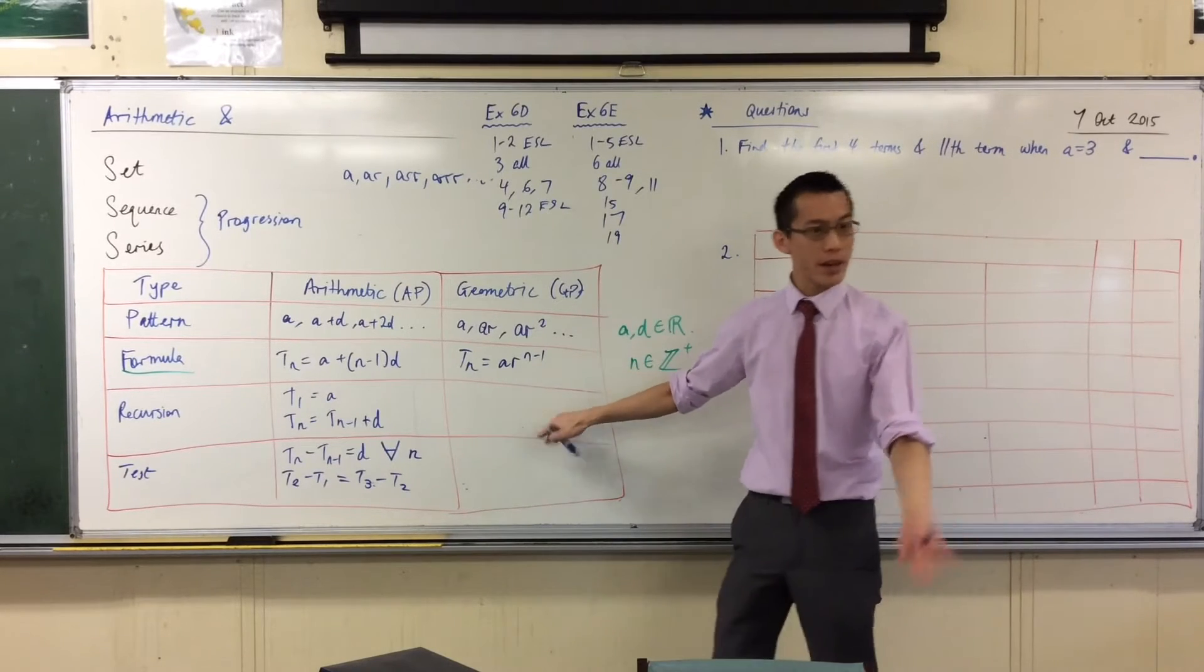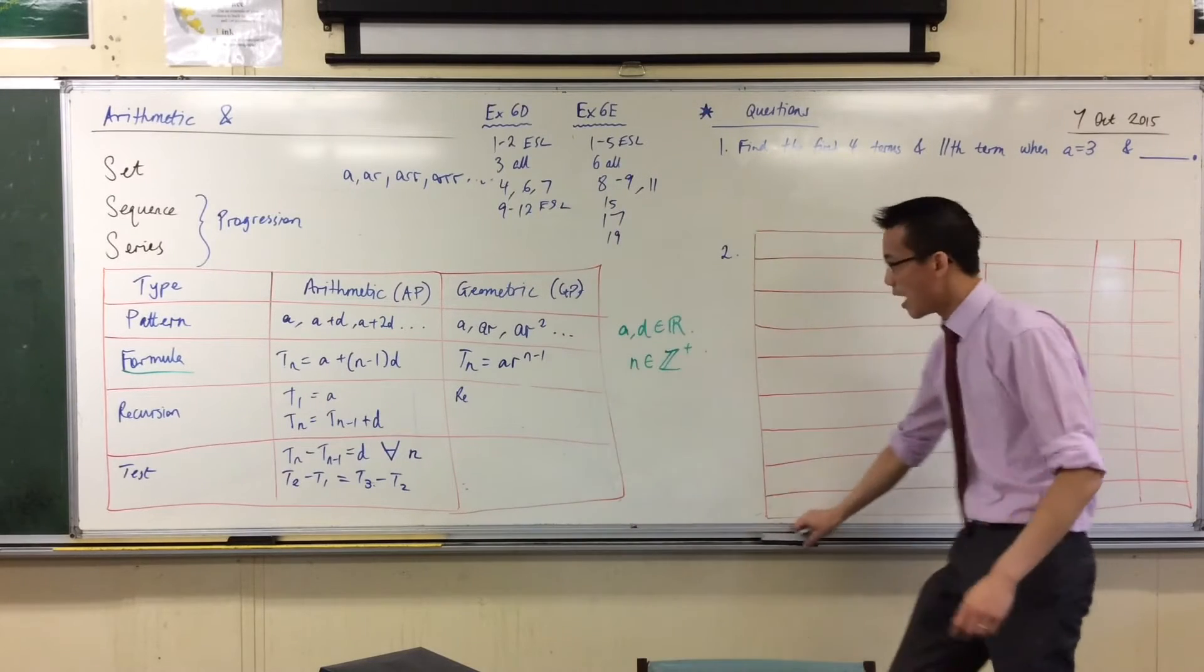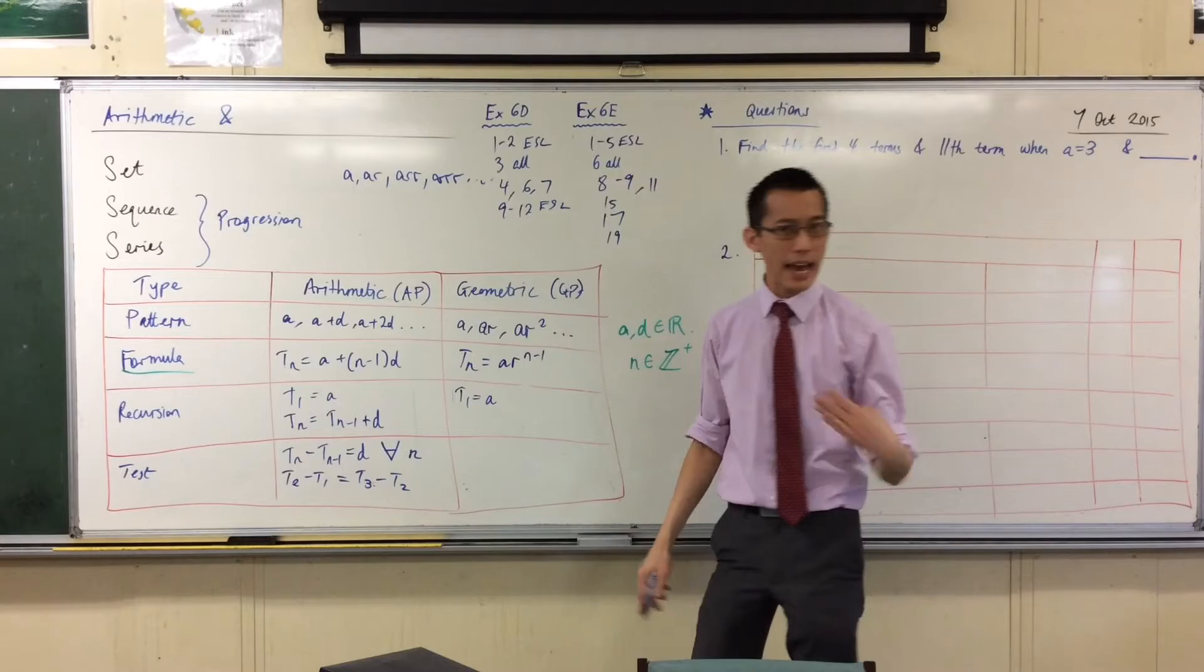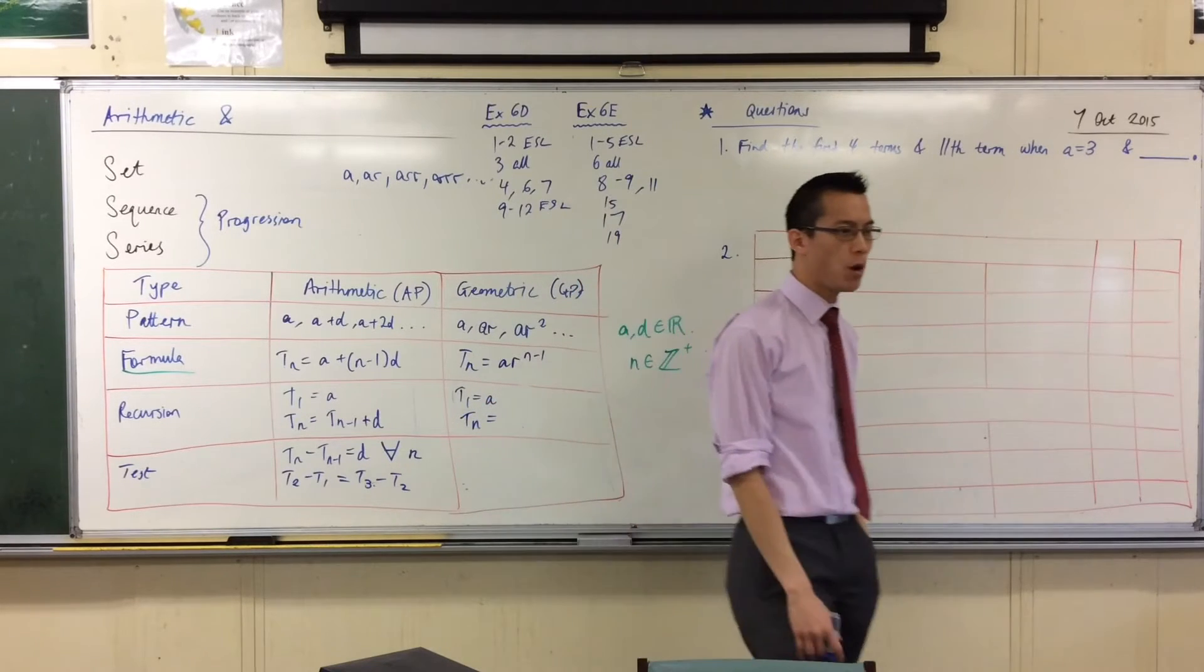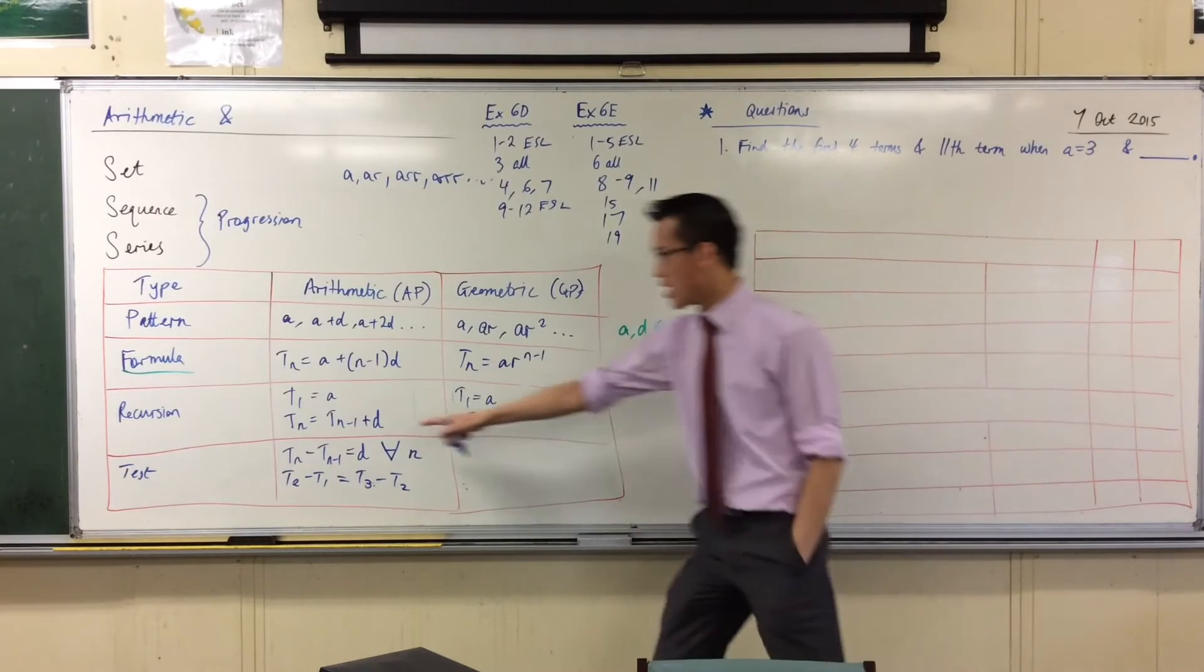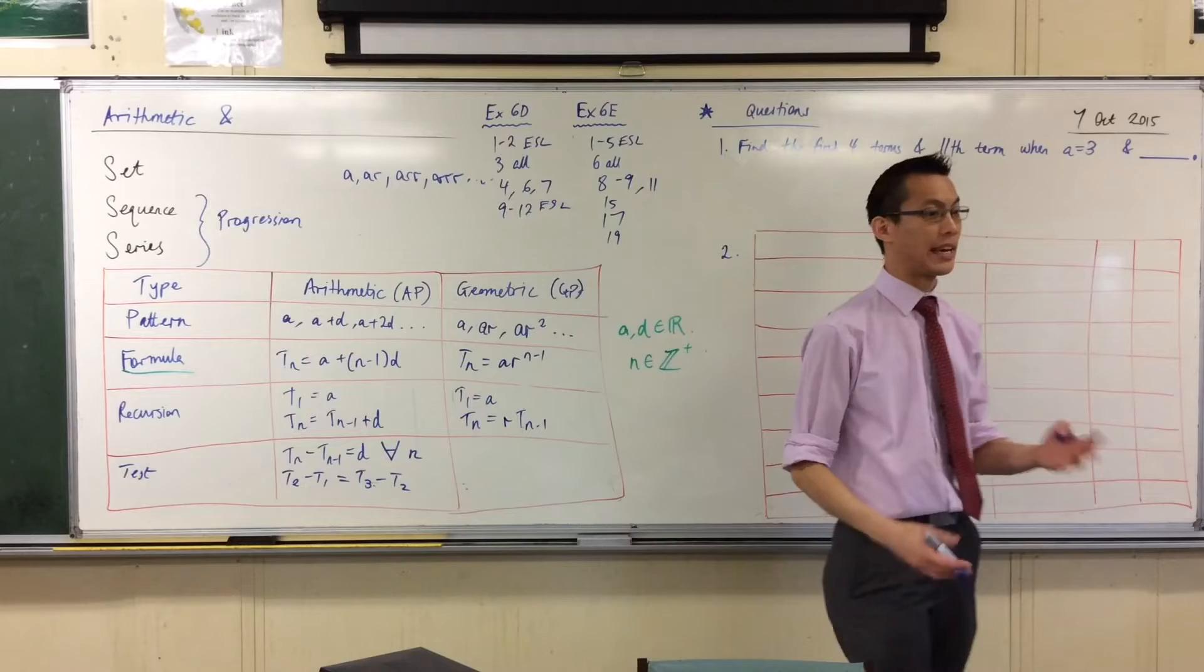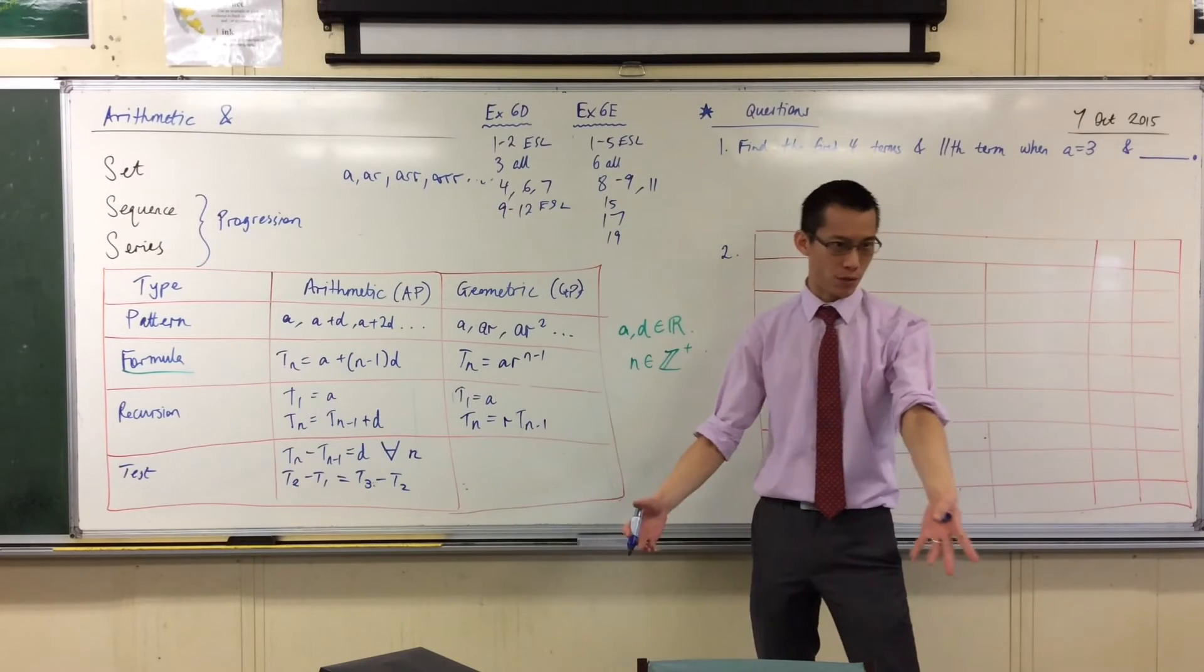In exactly the same way, from here I could go to a recursive definition. I don't need to write recursion again. I can simply say we lock in the first term as A. Once you know what the first term is, you can get any subsequent term, the nth term, by saying what? TN minus 1. It'll be the previous term, but multiplied, so I'm just going to write that R out the front. To get to the next term, you take the previous term, you multiply by whatever the ratio is.